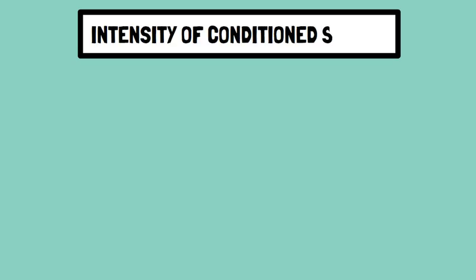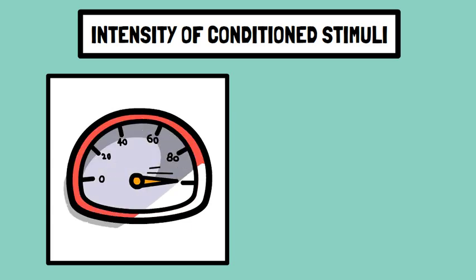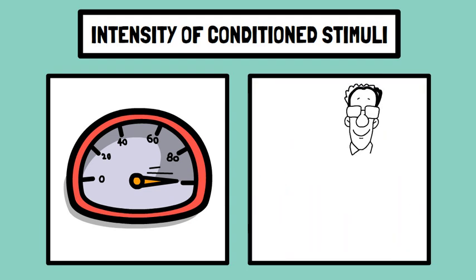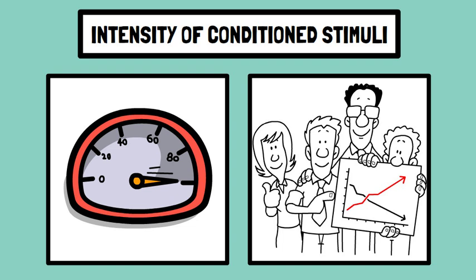Number three: Intensity of the conditioned stimulus. This influences the rate of both appetitive and aversive classical conditioning. More intense conditioned stimuli are more effective in accelerating the acquisition of a conditioned response — meaning the more intense the conditioned stimulus, the fewer acquisition trials are needed for conditioning.